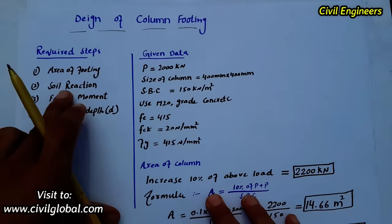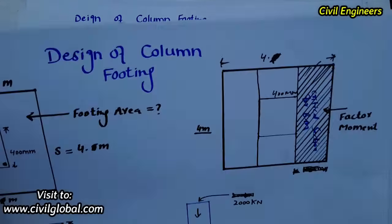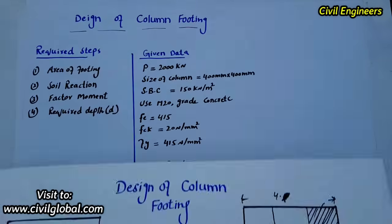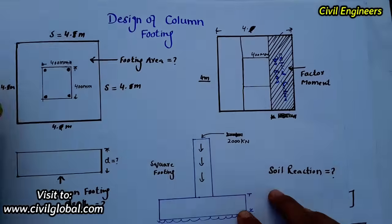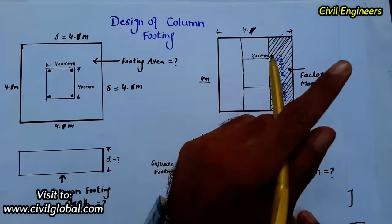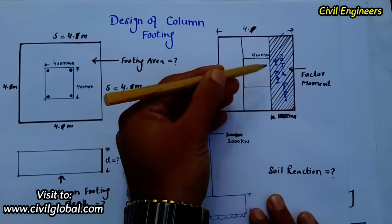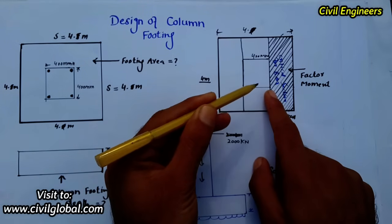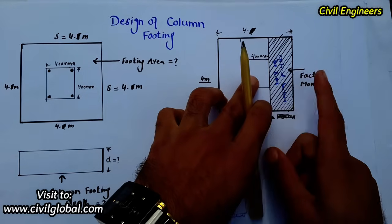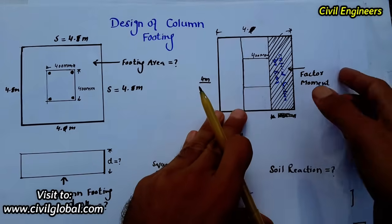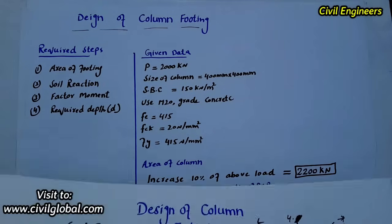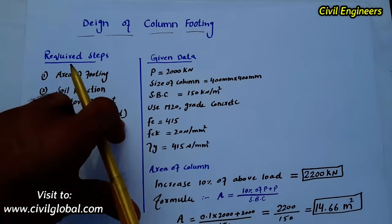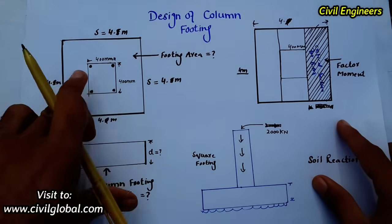The second step is to find the soil reaction. The third step is to find the factored moment — the factored moment for the critical section for bending moment, which is needed to find out the steel design. The fourth step is to find out the required depth of the footing.